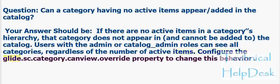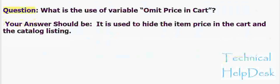Configure the glide.sc.category.canview.override property to change this behavior. Question: What is the use of variable omit price in cart? It is used to hide the item price in the cart and the catalog listing.